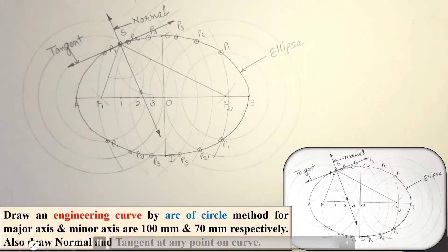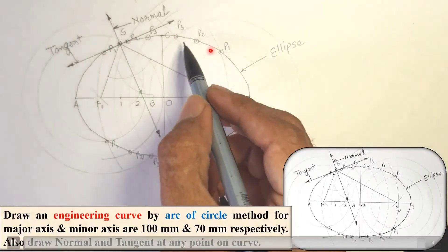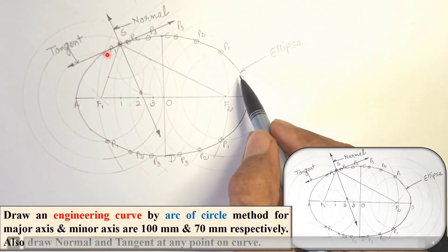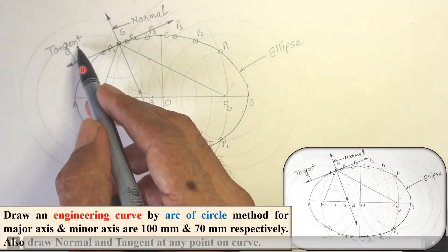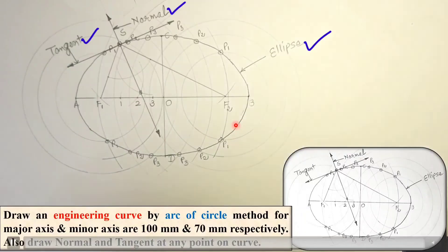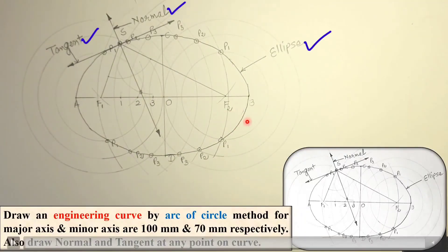Keep in mind that the ellipse, normal, and tangent should be drawn dark, while all the construction work should be as light as possible. Thanks for watching this video — please press the like button to appreciate.